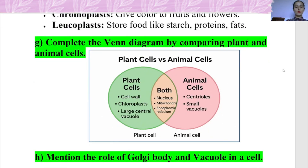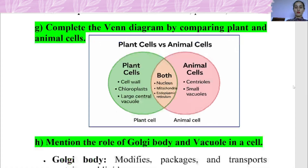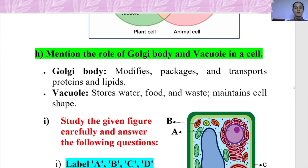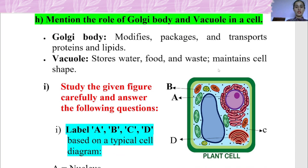Question G asks to complete the Venn diagram comparing plant cell and animal cell. Question H asks about the role of Golgi body and vacuole in the cell. Golgi body modifies, packages, and transports proteins and lipids. Vacuole stores water, food, and waste materials, and helps maintain cell shape.